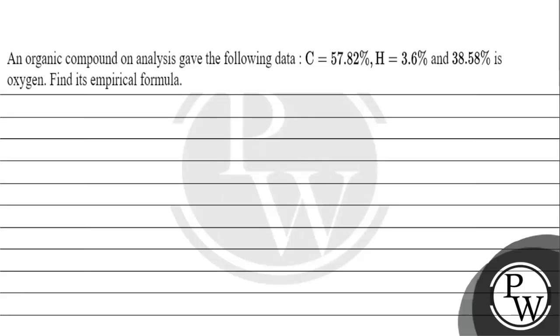Hello, let's read this question. The question says that an organic compound on analysis gave the following data: C is 57.82%, H is 3.6%, and 38.58% is oxygen. Find its empirical formula.